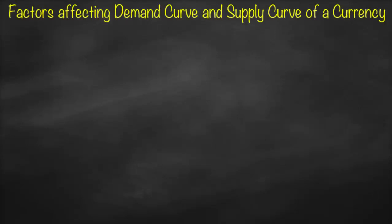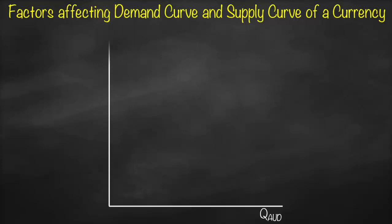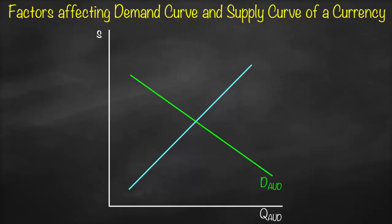In this video we discuss the factors affecting the demand curve and supply curve of a currency. On the x-axis we have the quantity of Australian dollar, and on the y-axis our exchange rate using indirect quotation. This gives us a downward demand curve and an upward supply curve for the Australian dollar, with the point of intersection giving us our equilibrium quantity and equilibrium exchange rate.